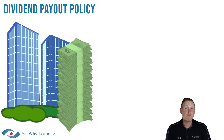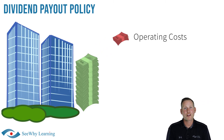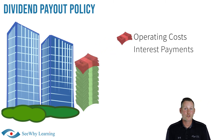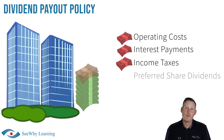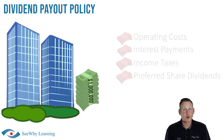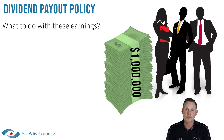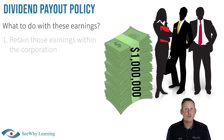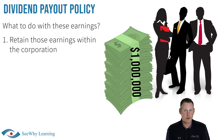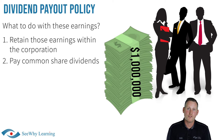Assume that a corporation has a million dollars left over after paying all of its expenses, such as operating costs, interest payments, income taxes, and preferred share dividends. The board of directors now has to decide what to do with these earnings. It has a couple of options: it can choose to either retain the earnings within the corporation or pay common share dividends.